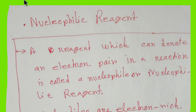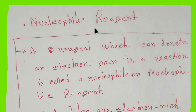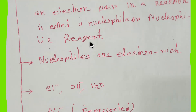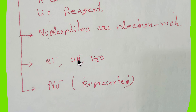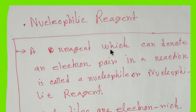A reagent which can donate an electron pair in a reaction is called a nucleophile or nucleophilic reagent. Nucleophilic reagents donate an electron pair — they are electron rich. Examples are water, hydroxide ion, and chloride ion. Nucleophilic reagents are represented by Nu minus. Thank you for viewing this video.